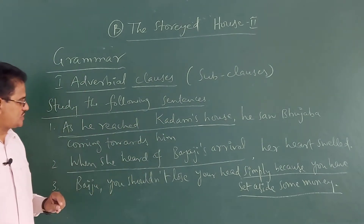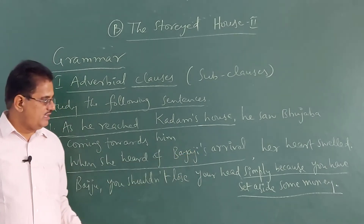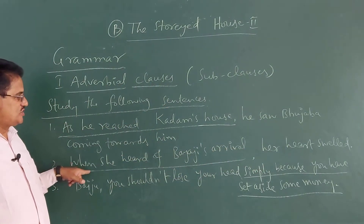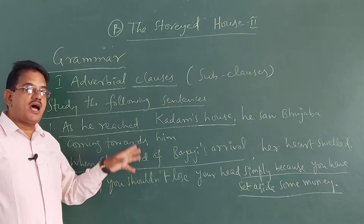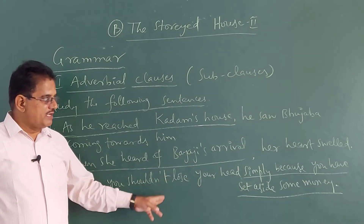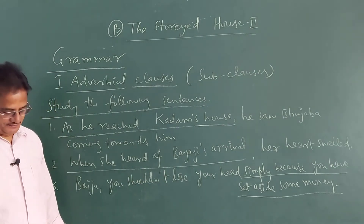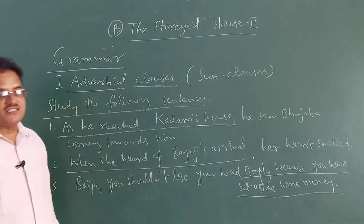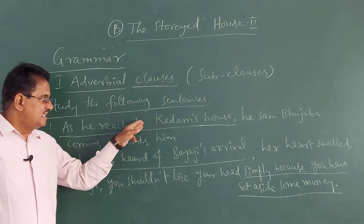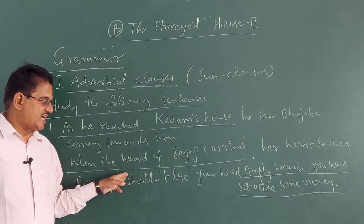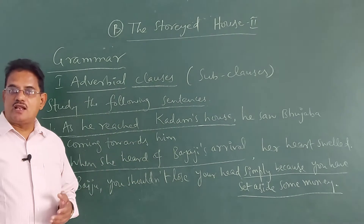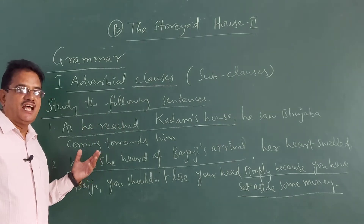Because 'as', 'when', and simply are words which are adverbs, these underlined parts are adverbial clauses — they are subordinate clauses, they are dependent clauses. They depend on the remaining part of the sentence, which is the main clause. 'When she heard of Bayaji's survival, her heart swelled' — 'her heart swelled' is the main clause. 'Bayaji, you should not lose your head simply because you have set aside some money' — here the last part of the sentence is underlined. So an adverbial clause can appear at the beginning or at the end of a sentence.